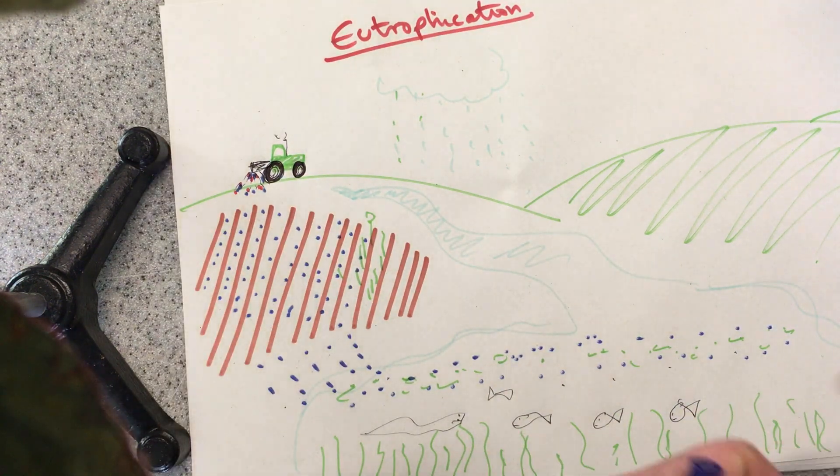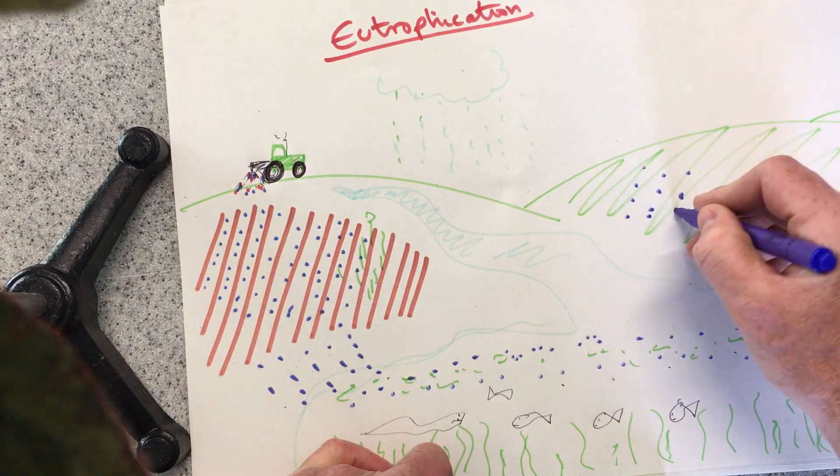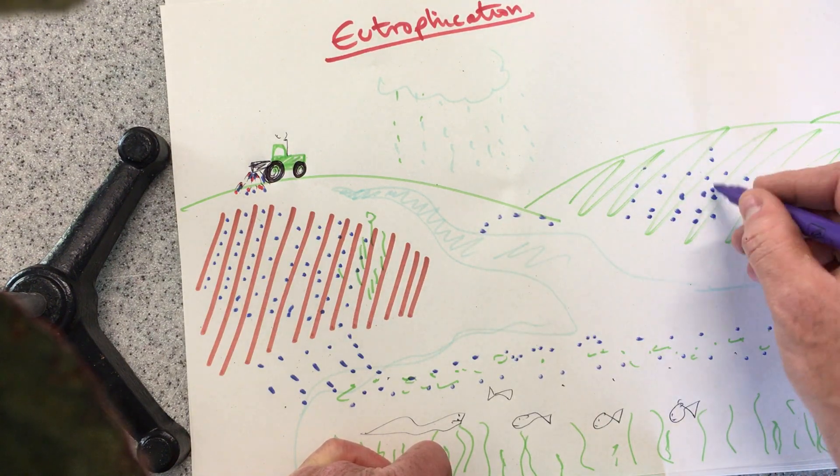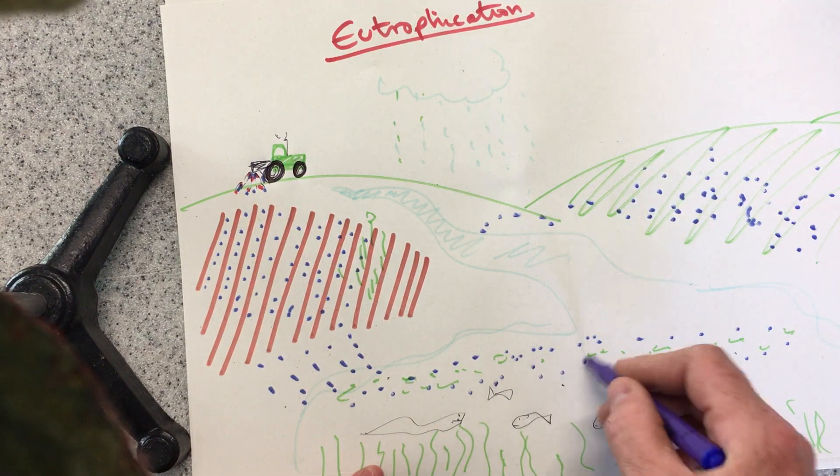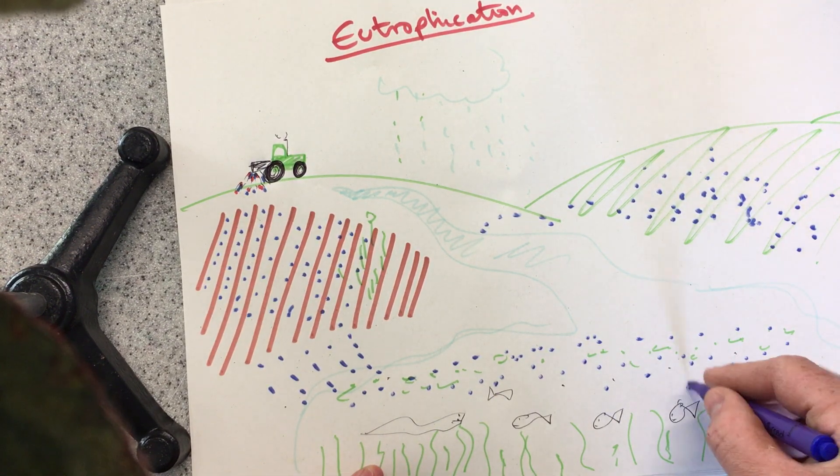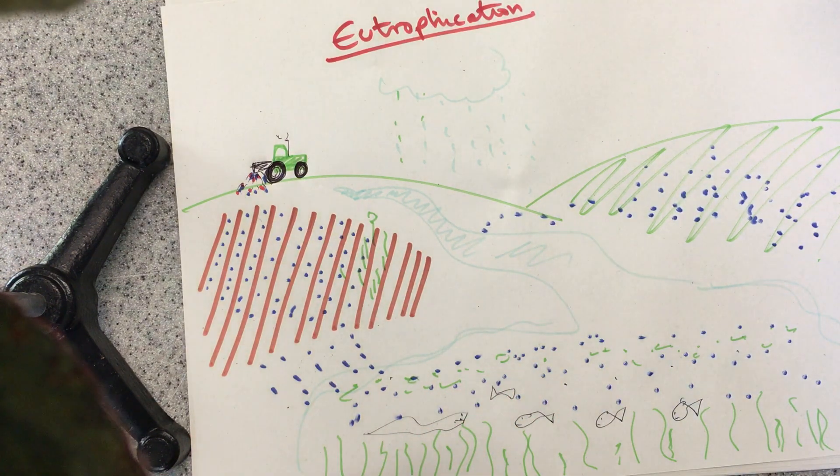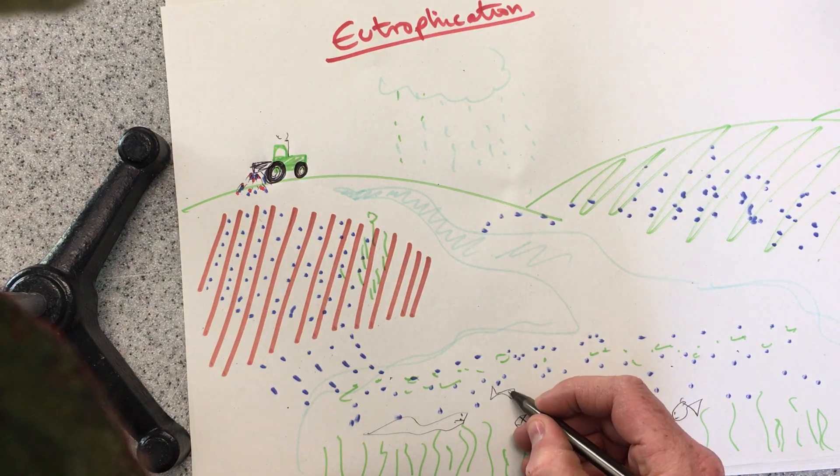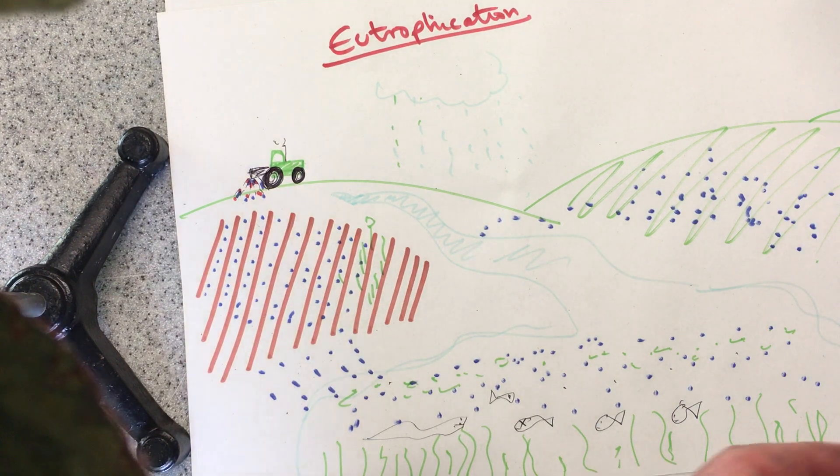But then my farmer goes, puts fertilizer on this field. And this field. And this field. And over here. Then we end up with lots in the water system. And that might be enough to pollute and kill some things. Dead. Okay? Maybe that's enough to kill some stuff. But here's eutrophication.